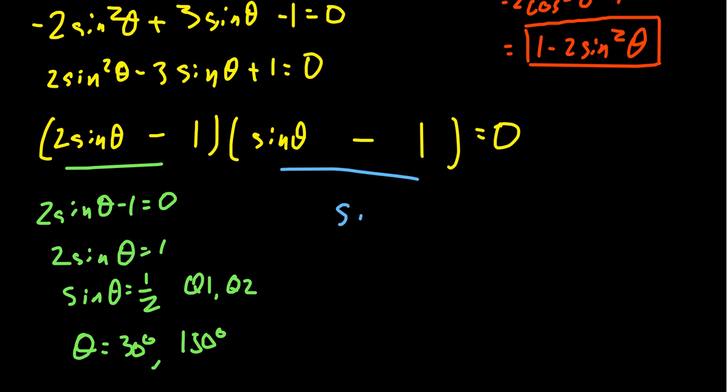For the second possibility, sine theta minus one equals zero, so sine theta equals one. When does sine theta equal one? When does the y-coordinate on the unit circle become a one? That happens at the top of the circle, which is 90 degrees.